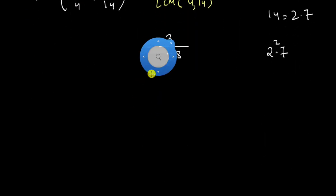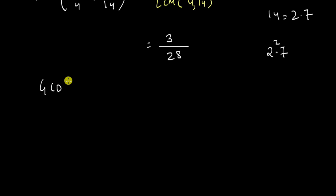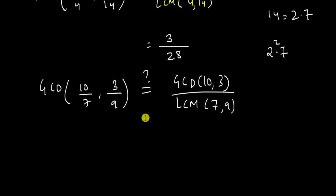Let's say we are finding the GCD of 10 by 7 and 3 by 9. Then will this be equal to the GCD of 10 and 3 divided by the LCM of 7 and 9? Will this be equal? The answer is no, it won't. Because 3 by 9 is not in its simplest form. We must bring it in its simplest form to 1 by 3 and then we can use this formula. So keep this in mind while using this trick.